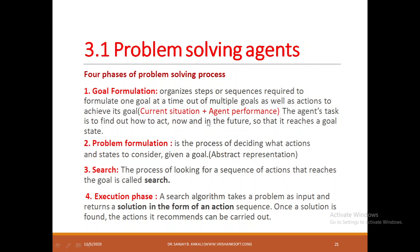This agent should have the current situation and its performance — it has to consider these two factors while formulating the goal. The next step is problem formulation. Once the goal is formulated, you are going to formulate the problem. It is a process of deciding what actions and states to consider given multiple goals. For example, if you want to go from Chikodi to Belgaum, there are four different ways — which path will you travel so that you reach Belgaum in the quickest time? Problem formulation is an abstract representation.